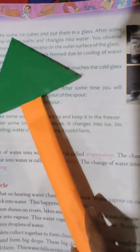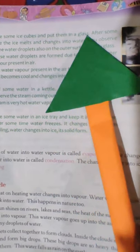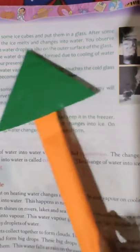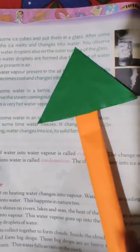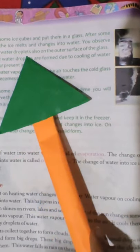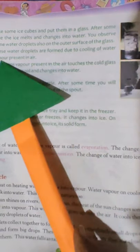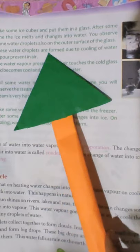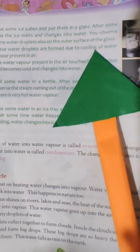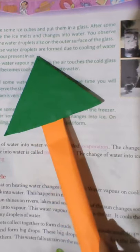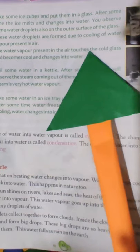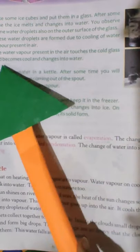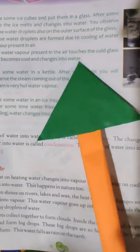Activity: Take some ice cubes and put them in a glass. After some time, the ice melts and changes into water. You observe some water droplets also on the outer surface of the glass. These water droplets are formed due to cooling of water vapor present in air. The water vapor present in the air touches the cold glass and becomes cool and changes into water.